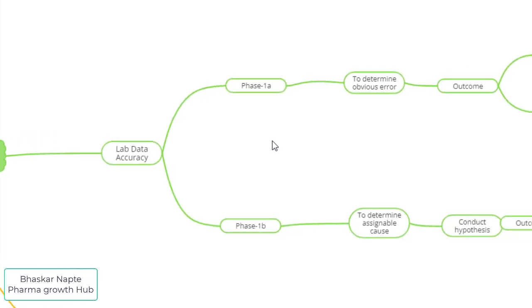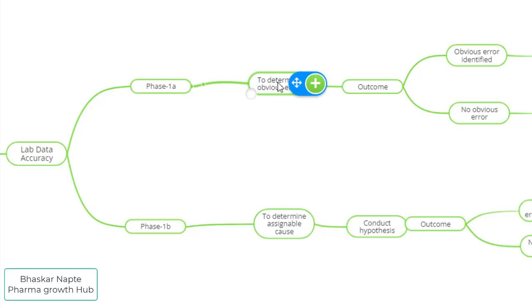Phase 1A is intended to determine if there is any obvious error associated with the reported OOS result. Obvious errors are those which have direct, detectable evidence — for example, wrong peak integration in chromatographic analysis, different instrument parameters in instrumental analysis, dilution errors, or weighing errors. These can be verified very easily because direct evidence is available. Phase 1A is designed to detect and identify such errors.